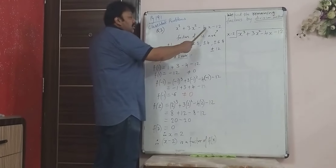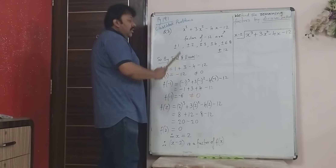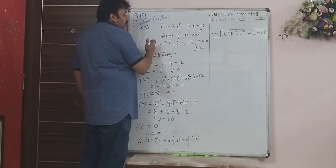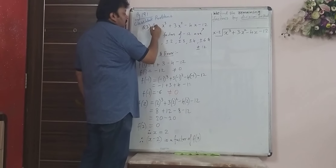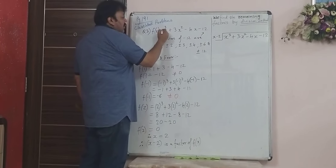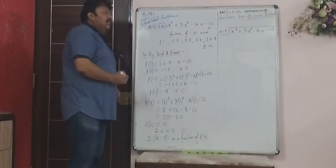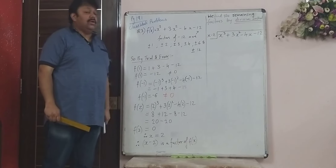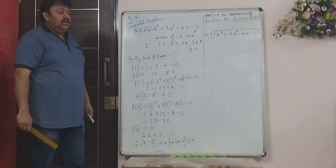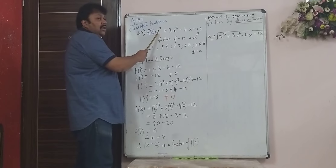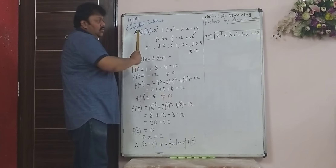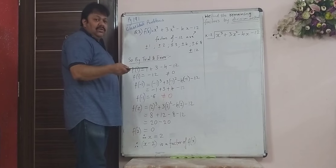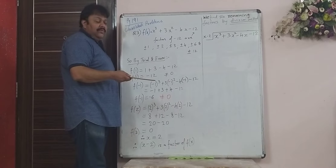The polynomial given is f(x) = x³ + 3x² - 4x - 12. The maximum degree is 3. You will get sums of degree 3 only, because factorization of degree 2 you did last year.